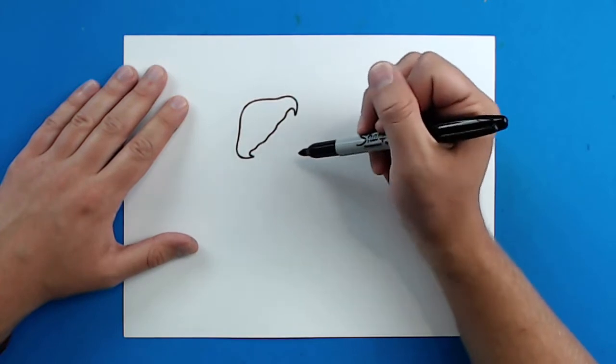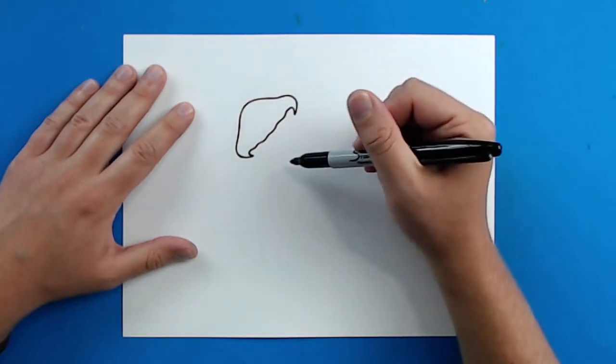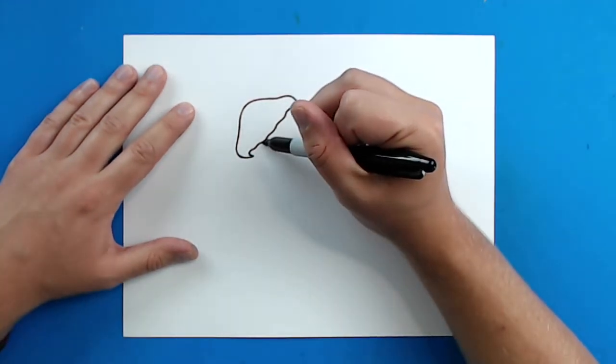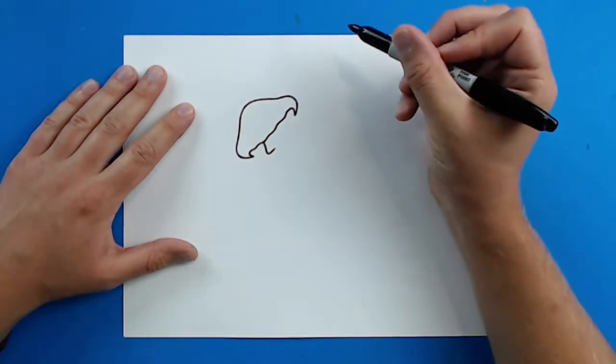Now the first thing I want to draw inside here is kind of like the really frilly inside part of the jellyfish. So to draw this, I'm just going to make some lines that go down and over like this, kind of like an L shape.